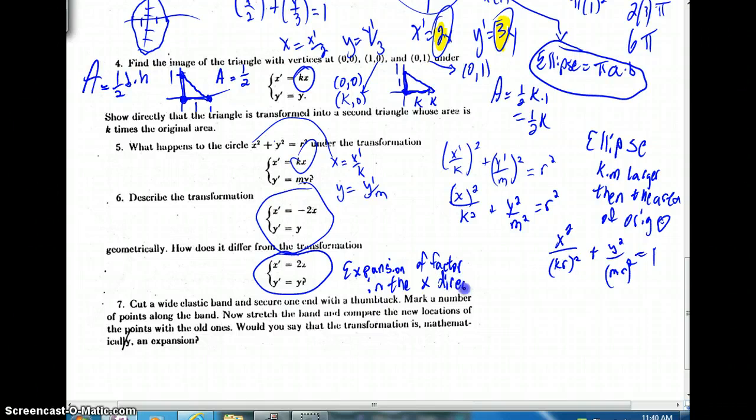In other words, all of our x coordinates would be multiplied by 2, and our new image would be 2 times the area of the original. When you're looking at this negative 2, it still is going to be an expansion of factor 2. However, there's also a reflection over the y-axis.